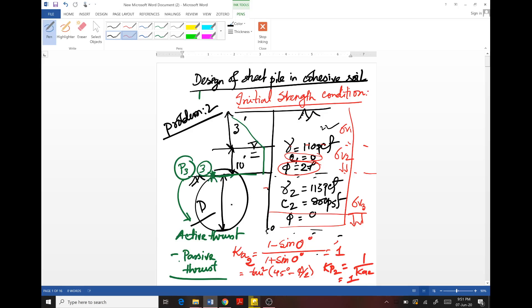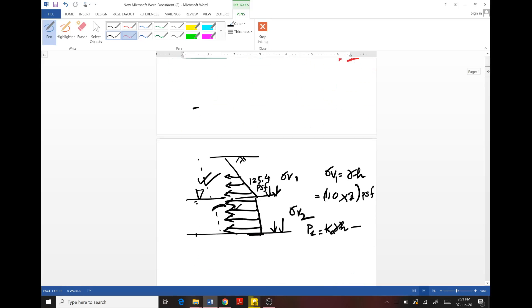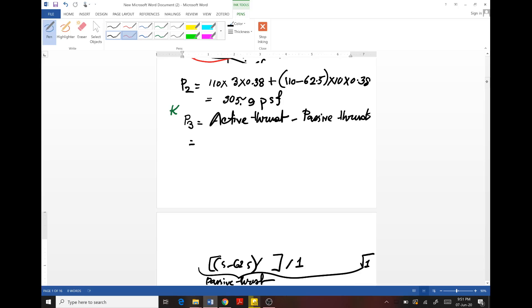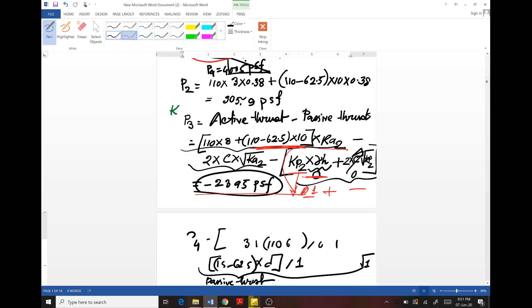We will again take moment with respect to point O and sum up the horizontal forces equals zero. In the same process we will again determine the value of depth of embedment length. After this we will check which one is the critical condition, that means for which condition the depth of embedment length is larger. The larger one will be taken as the designed embedded length. In the next class we will design it for the final strength condition.